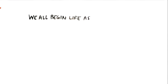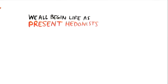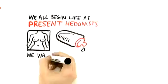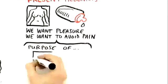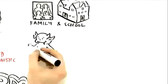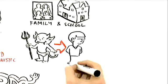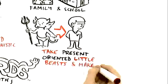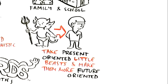We all begin life as present hedonists. All of us. At the breast, at the bottle, we want pleasure, we want to avoid pain. And one of the things that families do, and especially school, my sense is the purpose of schooling is to take present-oriented little beasts and make them more future-oriented, and some cultures make them more past-oriented.